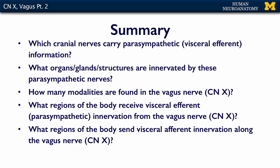In summary: which cranial nerves carry parasympathetic, i.e. visceral efferent information? What organs, glands, or structures are innervated by these parasympathetic nerves? How many modalities are found in the vagus — remember, it's a complicated one. What regions of the body receive visceral efferent or parasympathetic innervation from the vagus? And what regions of the body send visceral afferent innervation along the vagus towards the central nervous system?